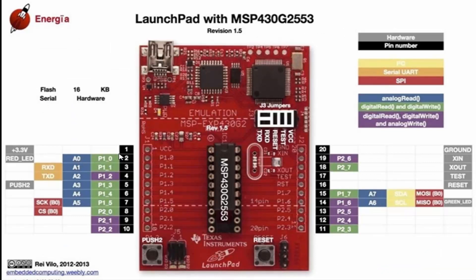On the launchpad, the first pin is VCC, the second pin is P1.0 which is pin number 2, and similarly pin numbers 11, 12, 13, and 14 are also shown. Each pin has multiple functions: pin number 2, which is P1.0, is also used as input of analog channel 0. P1.1 is analog channel 1, and P1.5 is analog channel 5. Pin numbers 3 and 4 are also used for serial communication, and pin numbers 14 and 15, which are P1.6 and P1.7, are used for I2C communication.